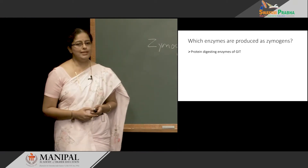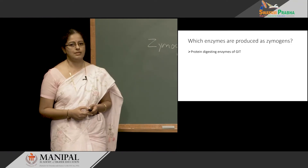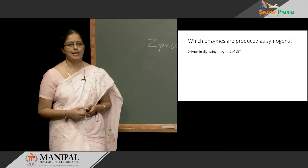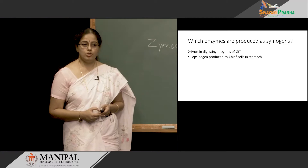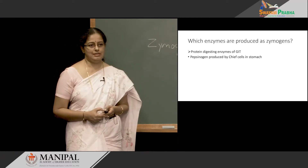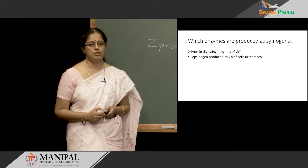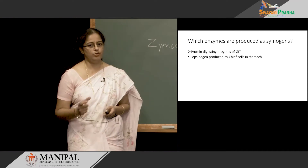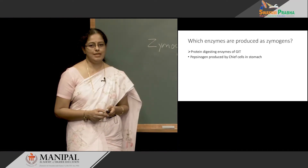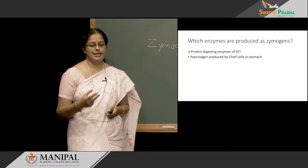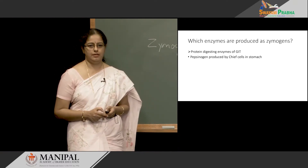Some of the protein-digesting enzymes of the gastrointestinal tract are produced as Zymogens. Pepsinogen is produced by the chief cells in the stomach. They are synthesized and stored as Zymogen in the pepsinogen form. Once pepsinogen is released into the lumen of the stomach, it gets activated to its active form called pepsin.